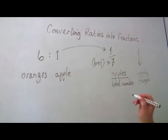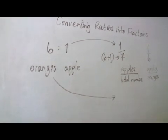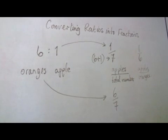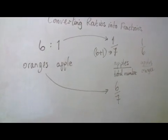If I want the fraction of oranges, of course, it will be different. It will be 6 out of 7. And this makes more sense if I do it this way.